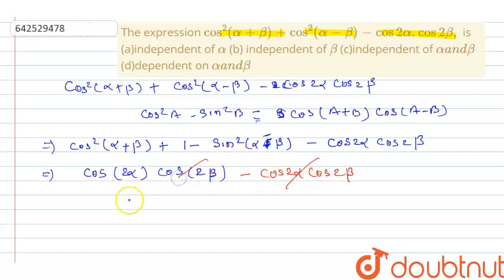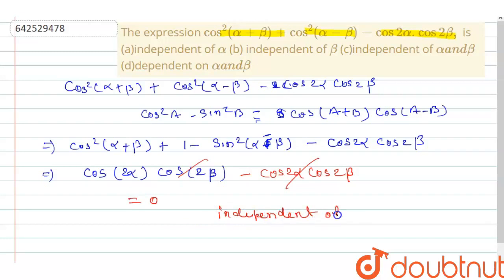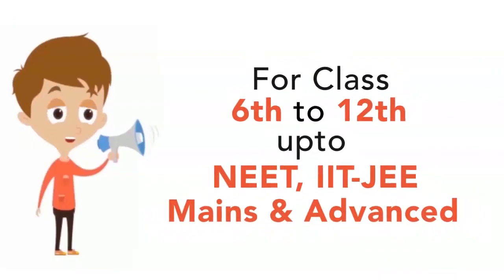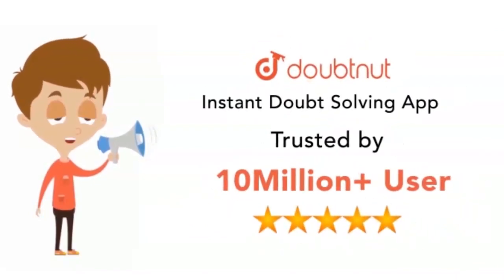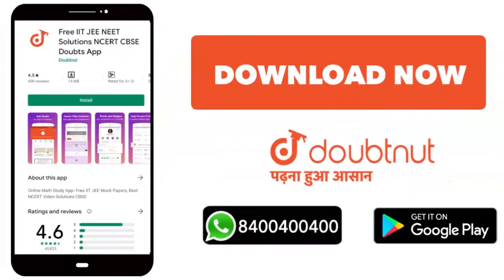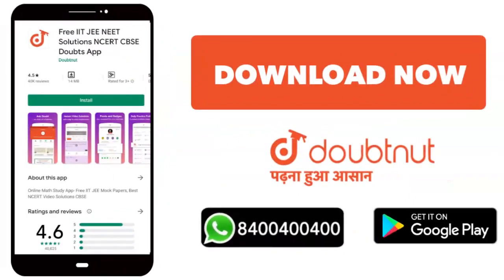Both terms will be cancelled out, so it will be equal to 0. We can say that this expression is independent of both alpha and beta. So our correct answer is (C). Thank you.